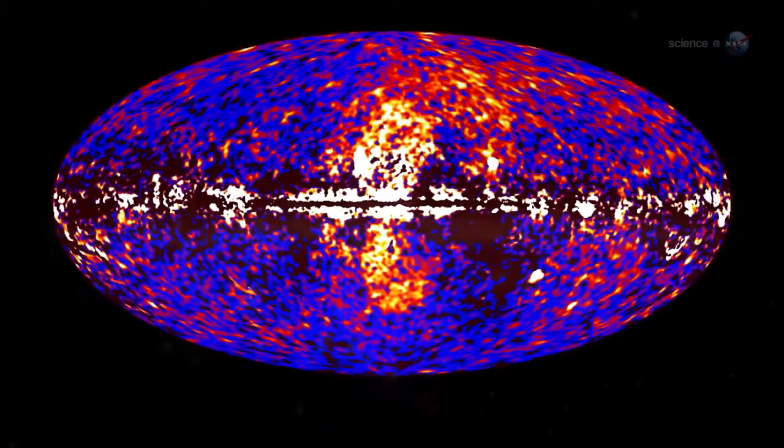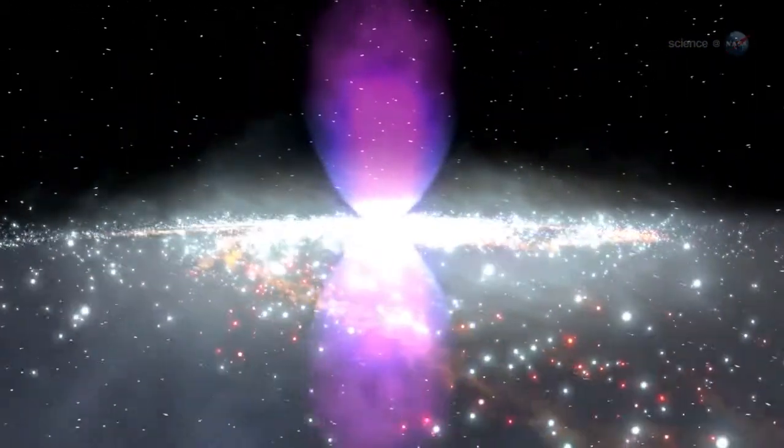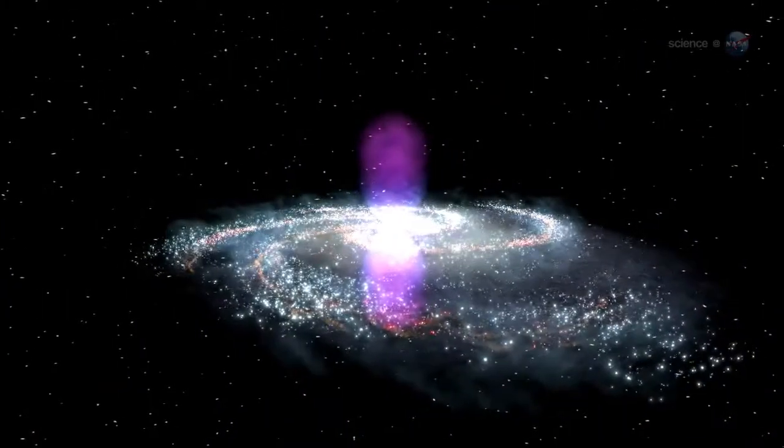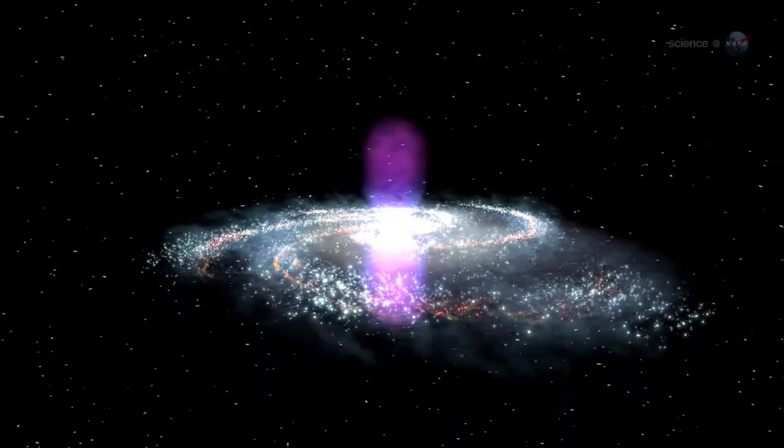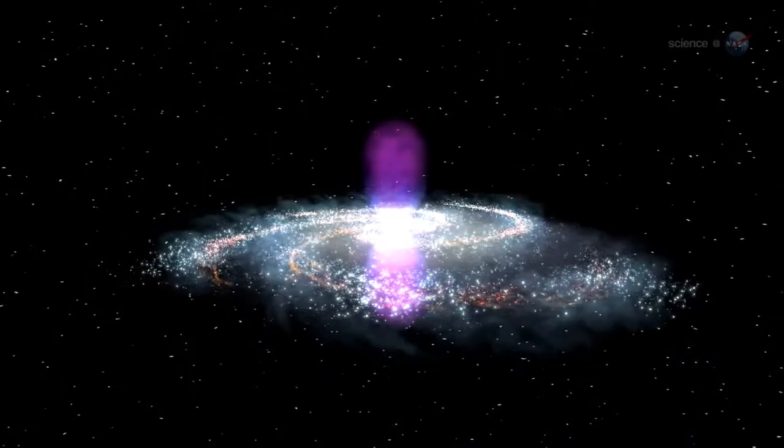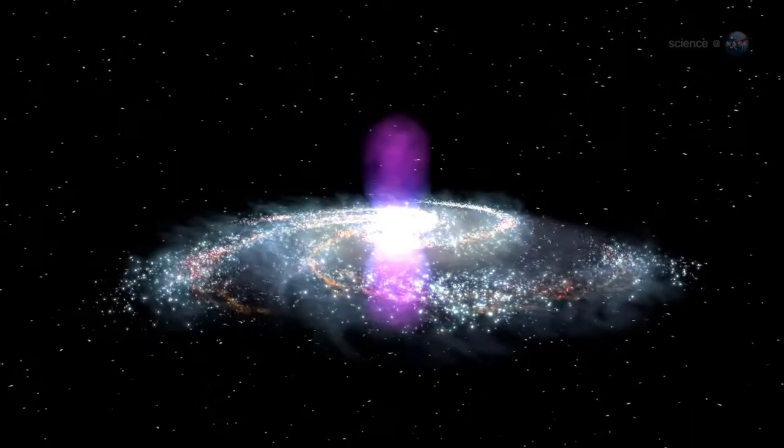And some of the gamma rays seem to come from the Fermi bubbles, giant structures emanating from the Milky Way's center and spanning some 20,000 light-years above and below the galactic plane. Exactly how these bubbles formed is another mystery.